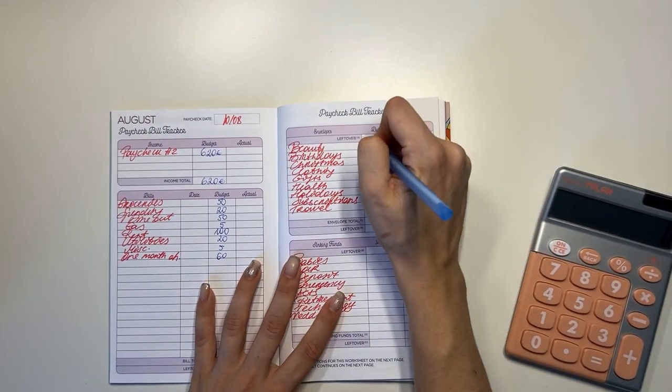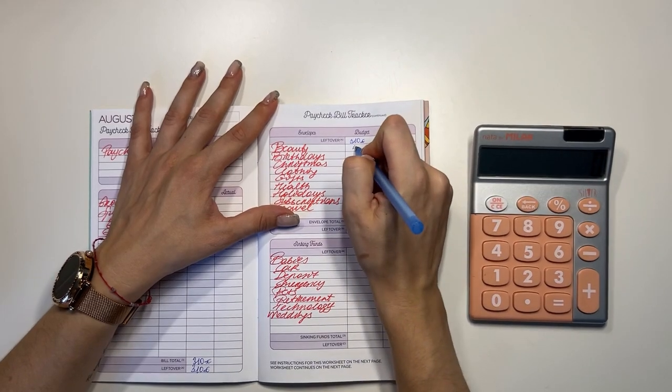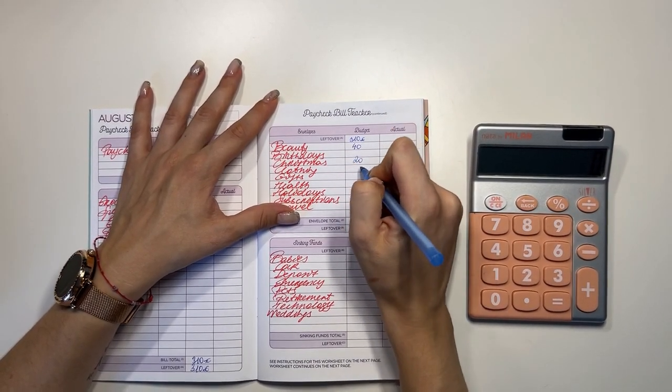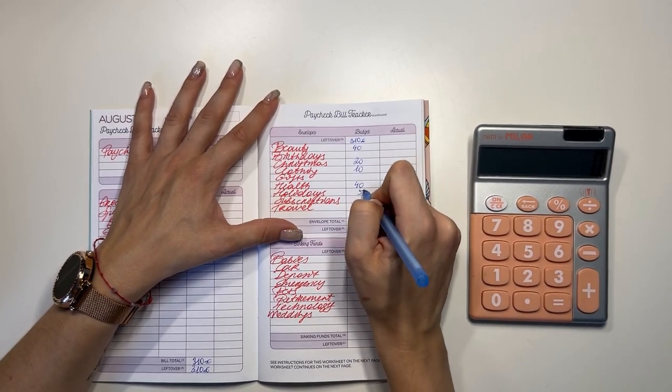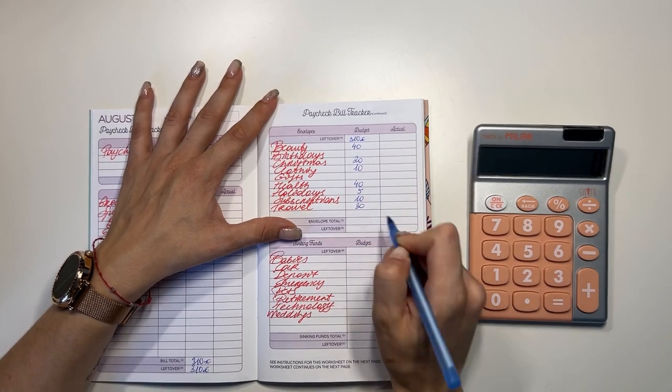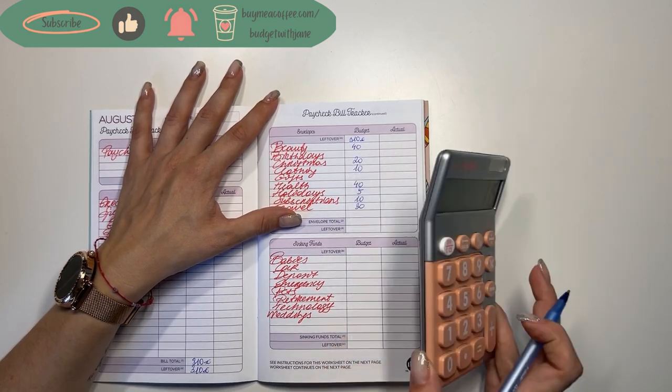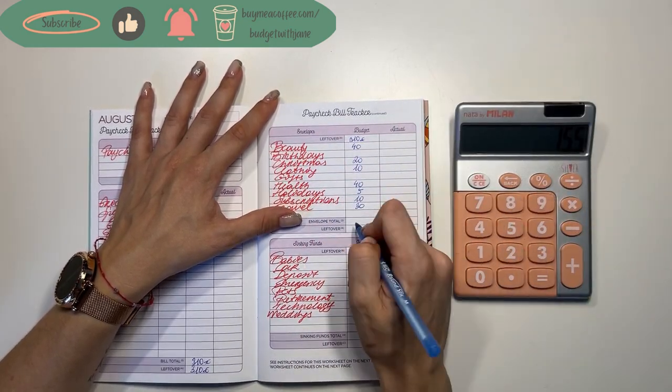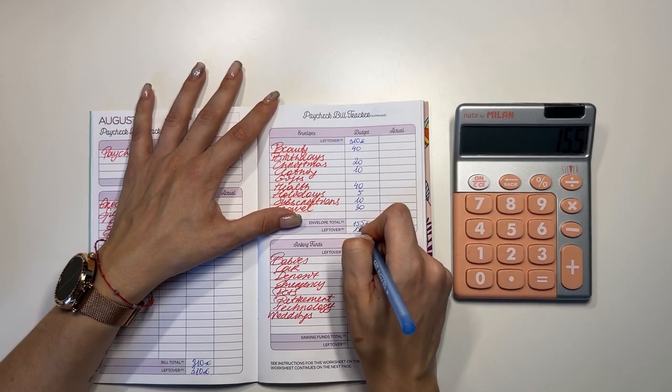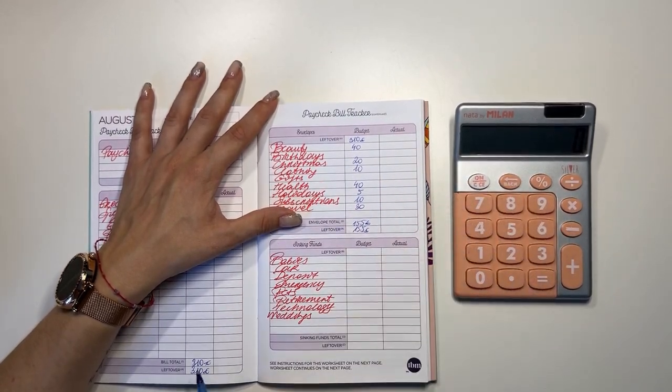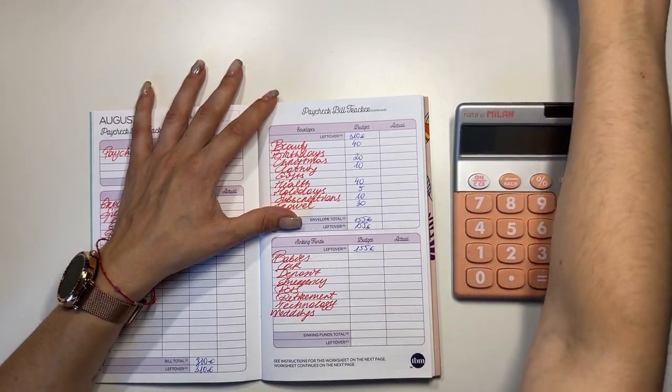Short-term sinking funds we are stuffing 40 into beauty, 20 into Christmas, 10 into clothing, 40 into health, 5 in holidays, 10 in subscriptions and 30 into travel. So 40 plus 20 plus 10 plus 40 plus 5 plus 10 plus 30, that's 155. So 310 minus 155 is 155. That's kind of crazy that these all were exactly the same. Wow, okay, I don't think that has ever happened.